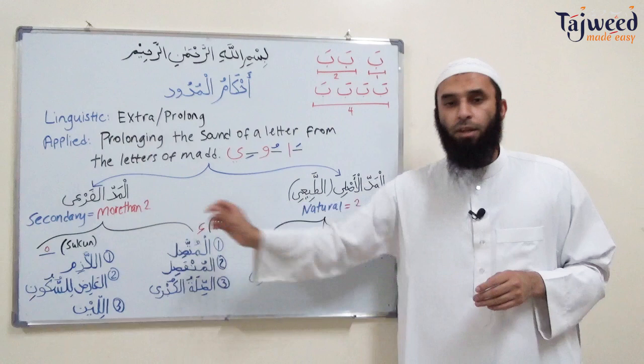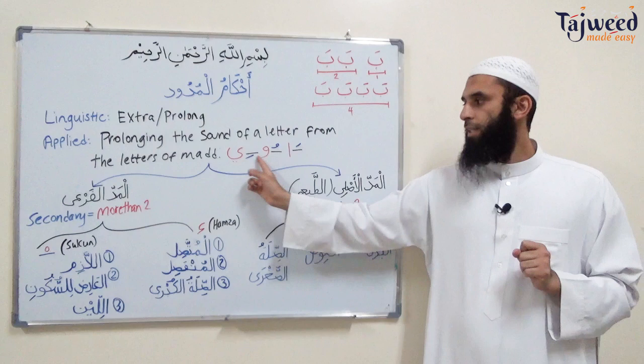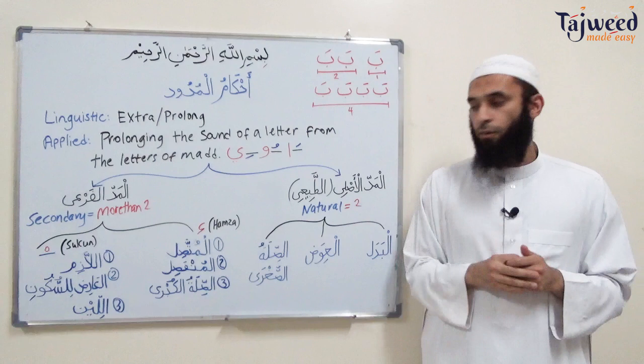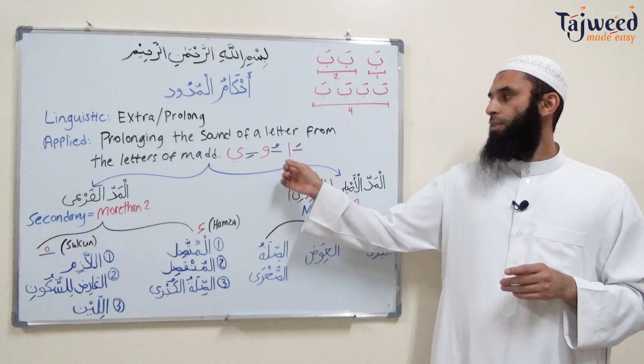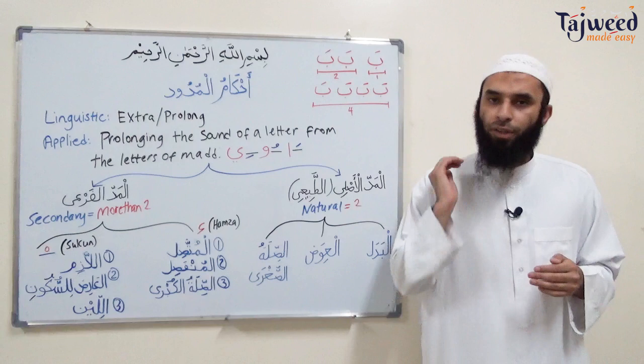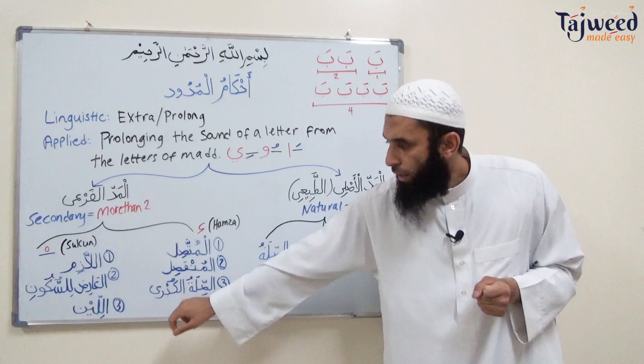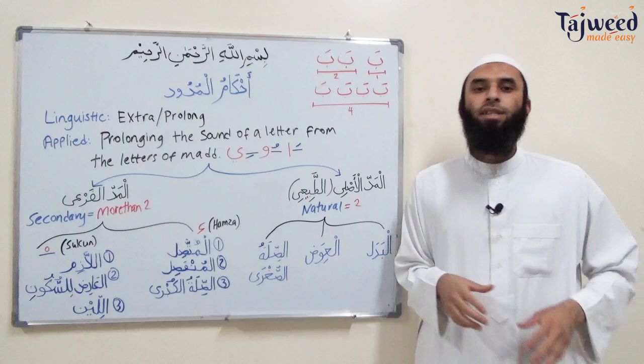Mad al-far'i is broken into two categories. Number one: after the huruf al-mad, if there is a hamza, then there will be three categories of mad — mad al-mutasil, mad al-munfasil, and mad al-silat al-kubra. The second category is mad due to sukun — if after these three letters there is a letter with a sukun, that gives three more categories: mad al-lazim, mad al-ari al-sukun, and mad al-leen.